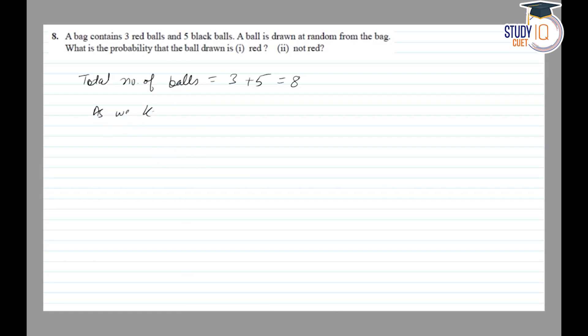As we know that, probability of an event E is number of favorable outcomes divided by total outcome. This is the probability of event E. First case - getting red ball.